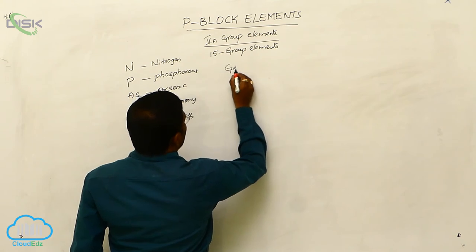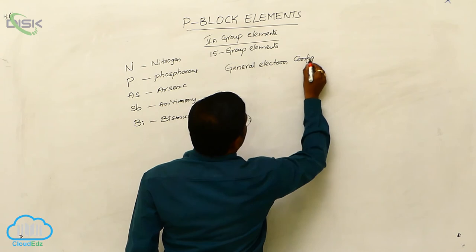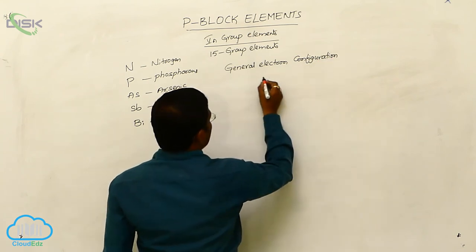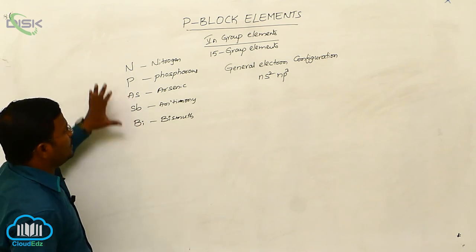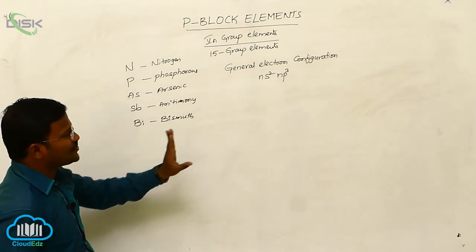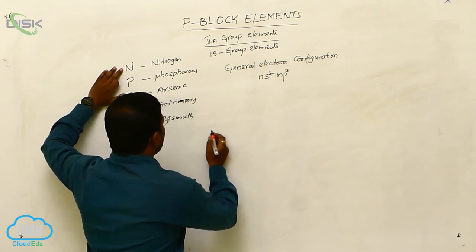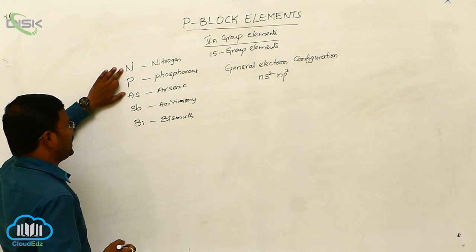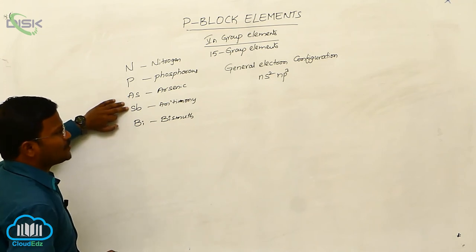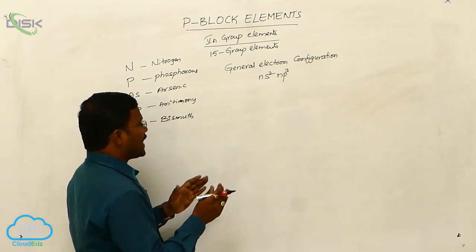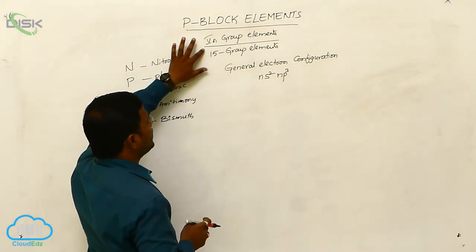Let us learn the General Electron Configuration of these elements. All elements belonging to the 15th Group will show a similar type of valence shell electron configuration denoted as Ns2, Np3. For example, Nitrogen is 2s2 2p3, Phosphorus is 3s2 3p3, Arsenic is 4s2 4p3, Antimony is 5s2 5p3, and Bismuth is 6s2 6p3. This is the General Valence Shell Electron Configuration — Ns2 Np3 — for the 5th A-Group or 15th Group Elements.